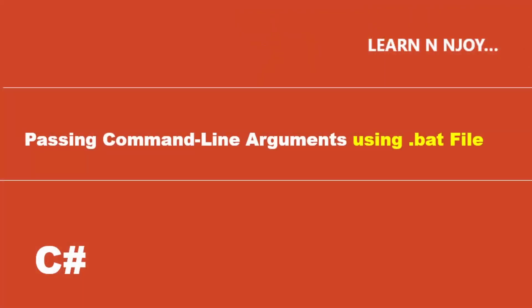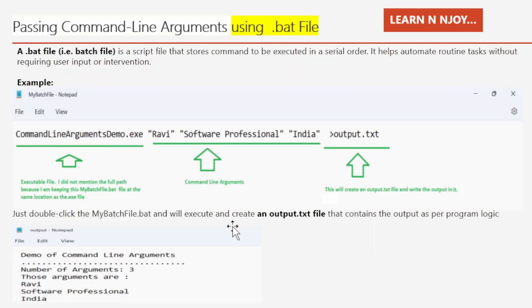Passing command line arguments using a .bat file. A bat file, also known as a batch file, is a script file that stores commands to be executed in a serial order. It helps automate routine tasks without requiring user input or intervention. Let's see how to create a bat file and how to pass command line arguments in it.